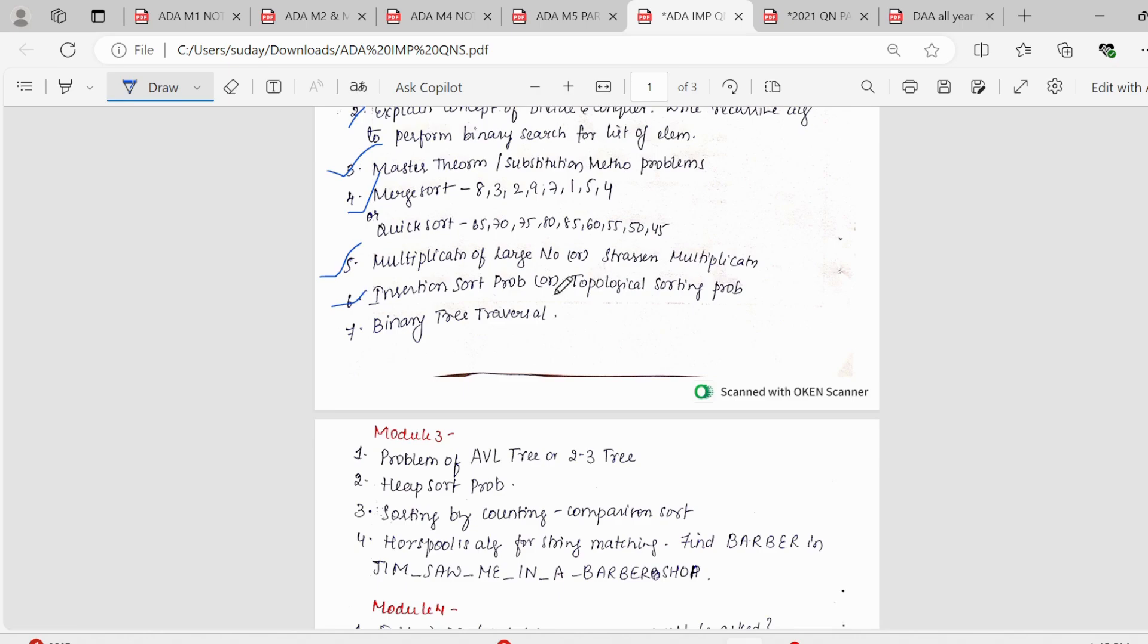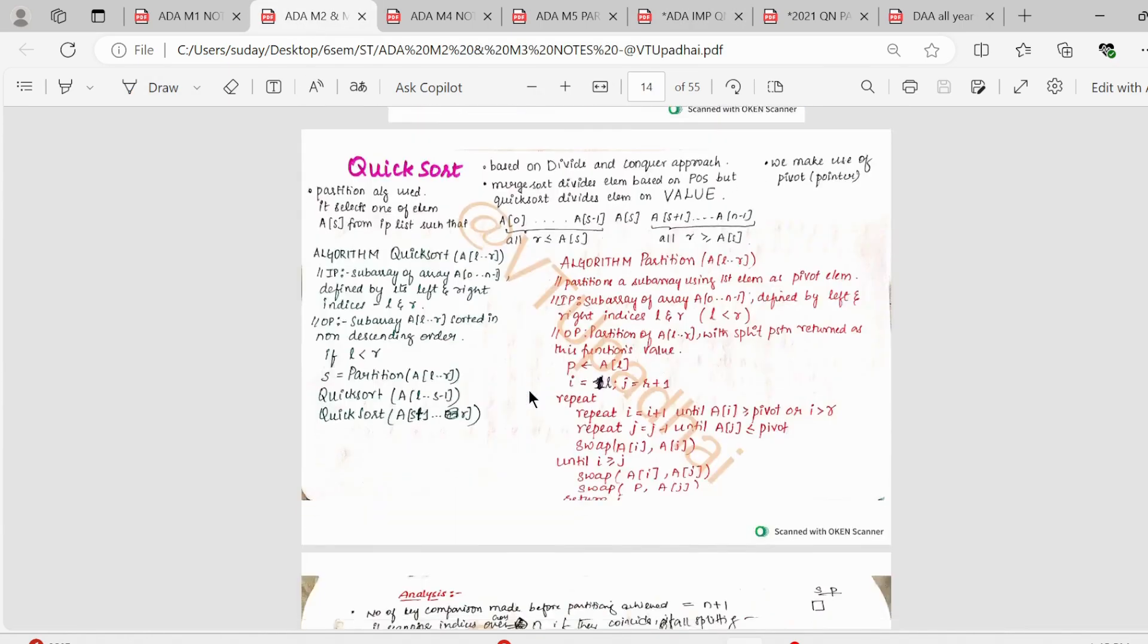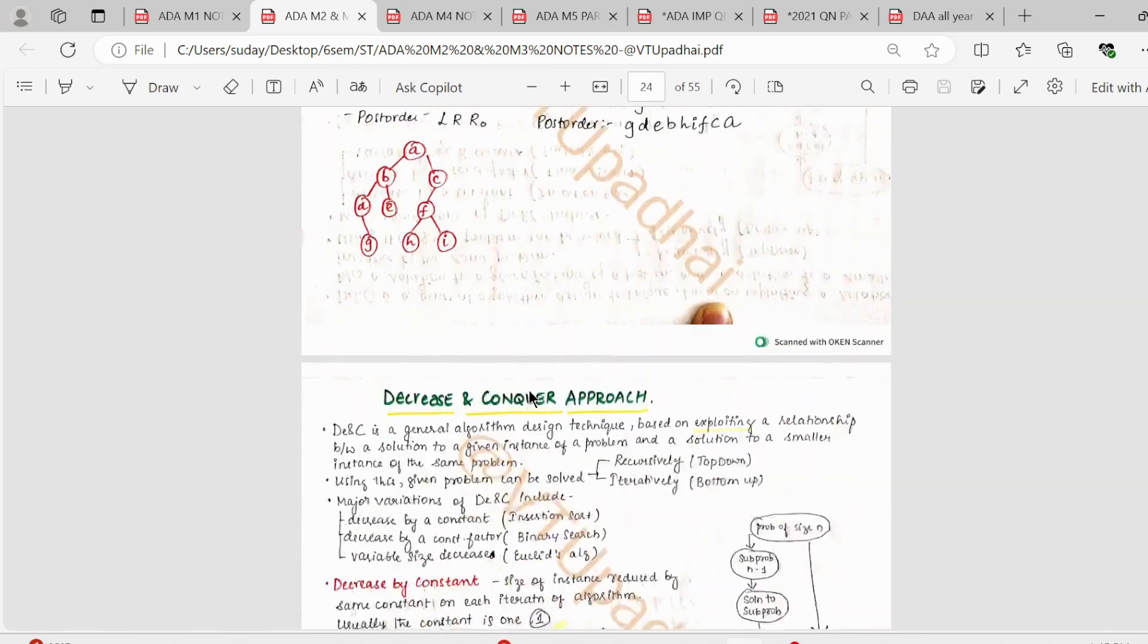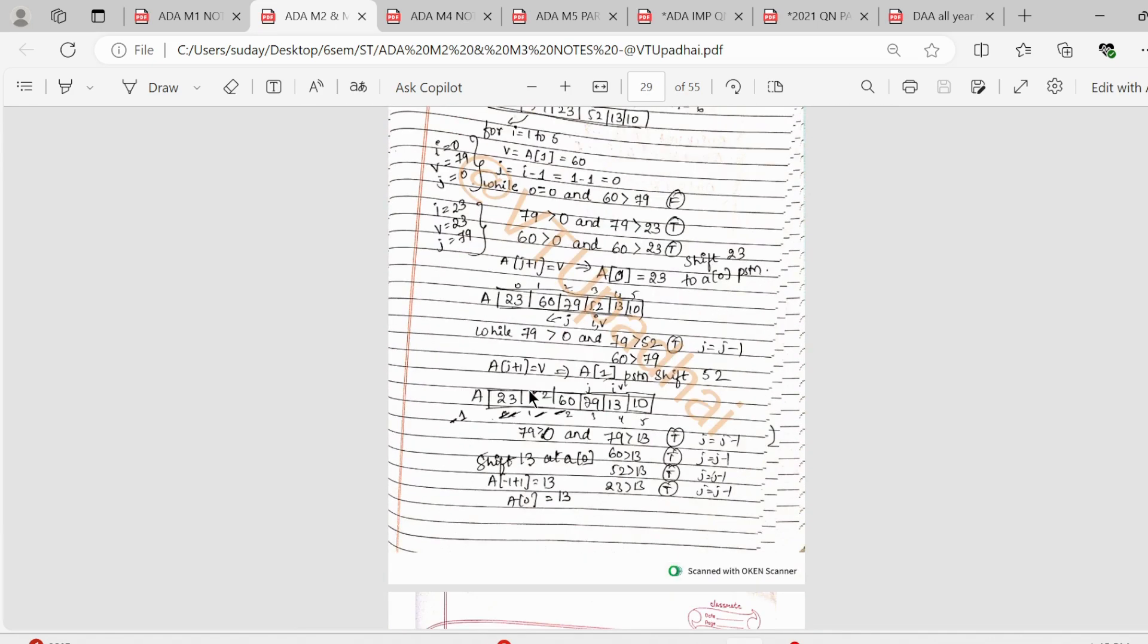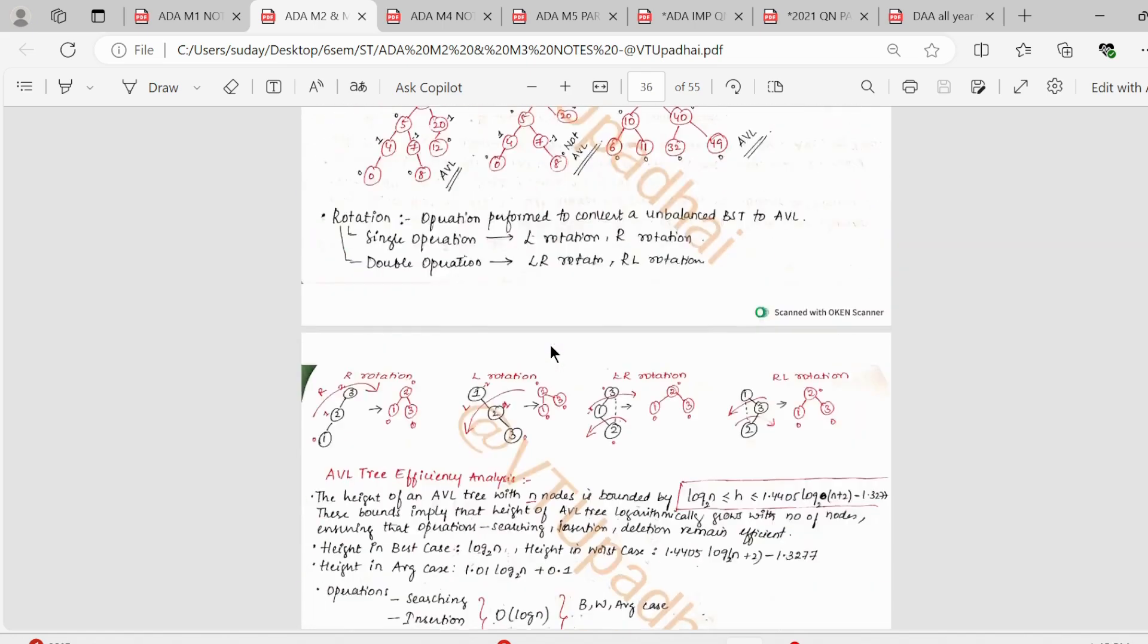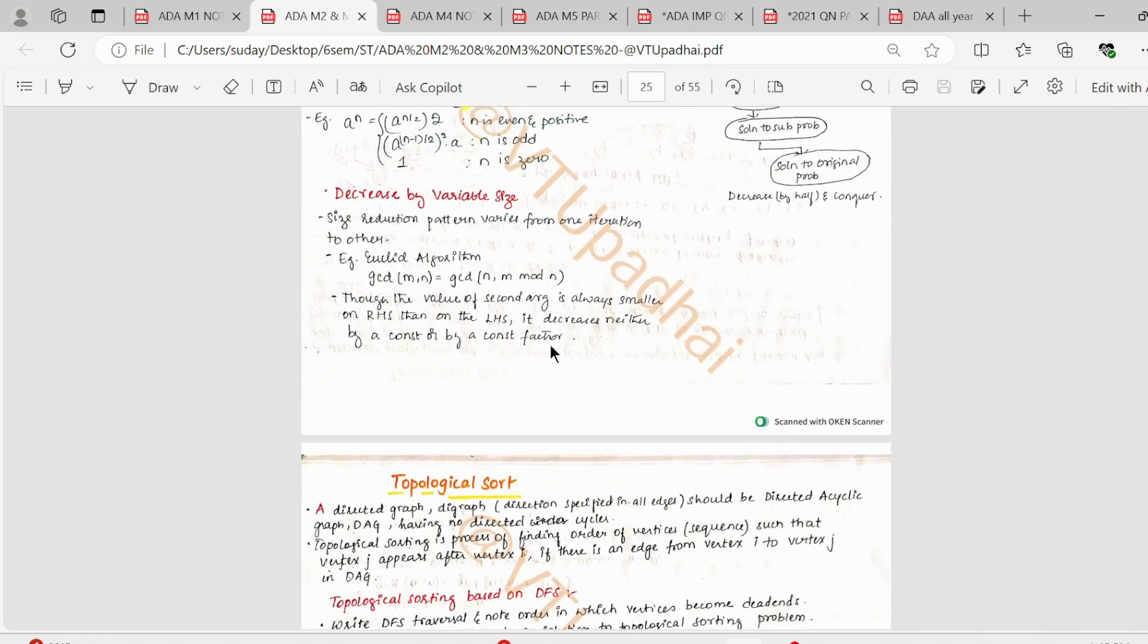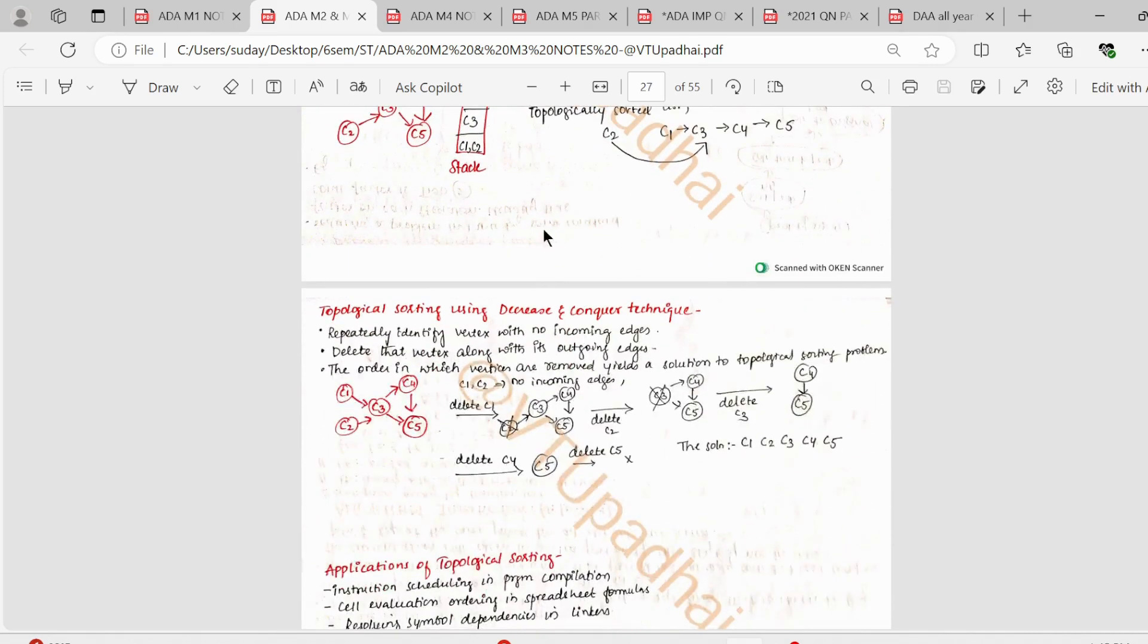Then you have insertion sort problem or topological sort problem. Insertion sort problem is again a pretty simple topic and topological sort is again very easy to understand. In that, simple problems could be there. We have the insertion sort algorithm, then example. So it is again very easy to solve. Then in topological sort, we have the normal sorting. This diagram would be given and we have to sort it using the order.